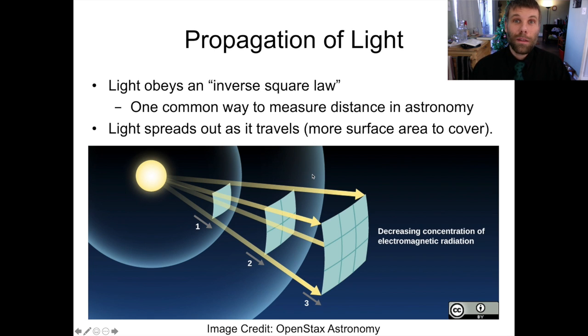But then the next sphere out with a distance of two, the light that passes through that single square in the first sphere now is passing through four squares. So the distance has doubled, but the area covered by the light has gone up by a factor of four. If we go to the third sphere, which is at a distance of three, now the distance has tripled, and the area has gone up by a factor of nine. So one squared is one, two squared is four, three squared is nine. Light obeys an inverse square law.